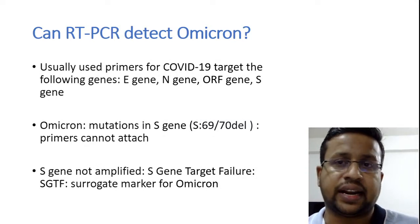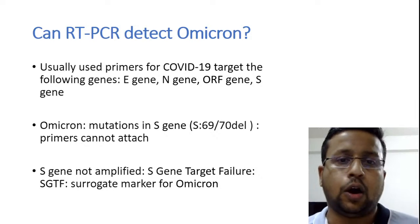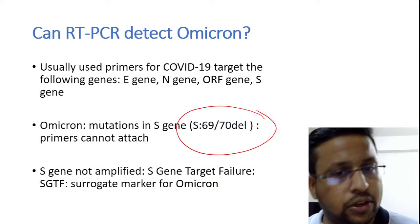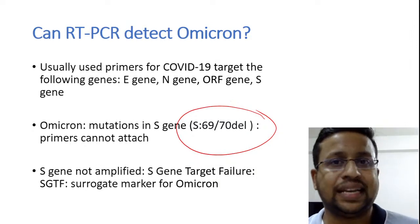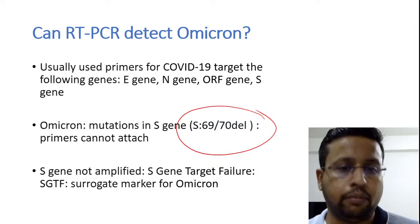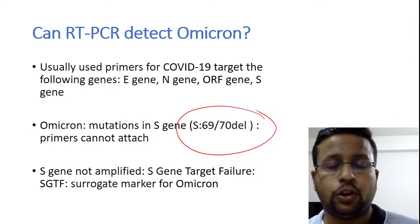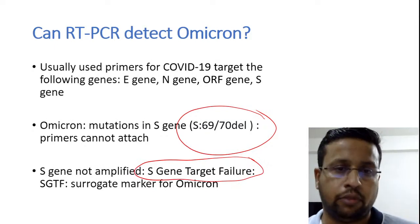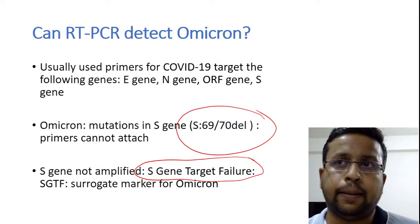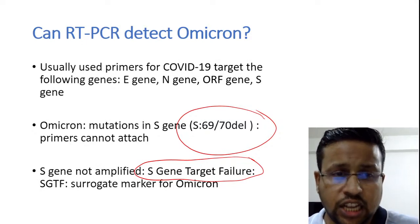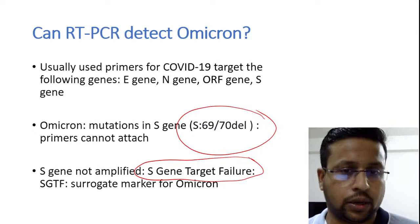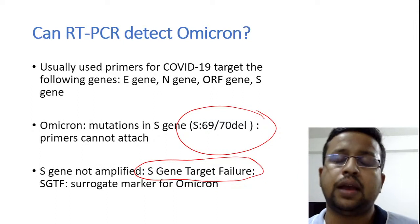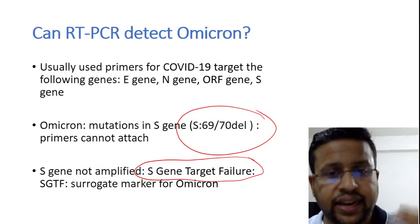Omicron has a specific S69-70 deletion, as a result of which primers cannot attach to the S gene. Even if other genes are amplified, PCR cannot amplify the S gene — this phenomenon is called S gene target failure (SGTF). SGTF is a surrogate marker for Omicron: the N gene and ORF1a/b genes are detected but the S gene alone is not detected. However, SGTF is not very specific — some Alpha and Delta variants can also show SGTF, but when Omicron is spreading in the community it can be used as a surrogate marker.